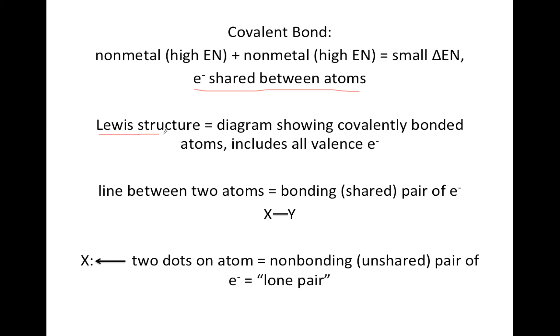A Lewis structure is the diagram that shows the covalently bonded atoms and it includes all valence electrons. In the Lewis structures we're going to draw on the next few slides,